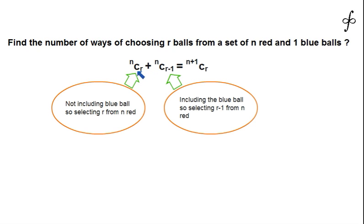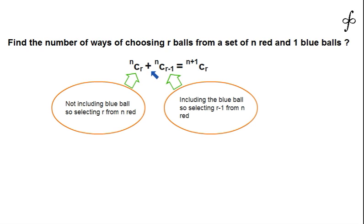Our aim today is to prove this identity — not by expanding nCr and nC(r-1) and then arriving at n+1Cr algebraically, which most of you already know from your school textbook. Instead, we are going to look at this identity from a different viewpoint, which will give us a new way of thinking in combinatorics and help us solve comparatively challenging questions.